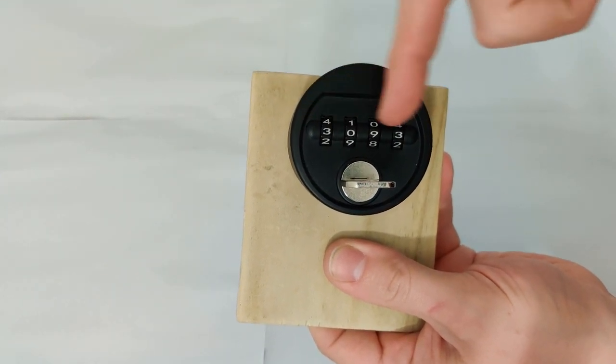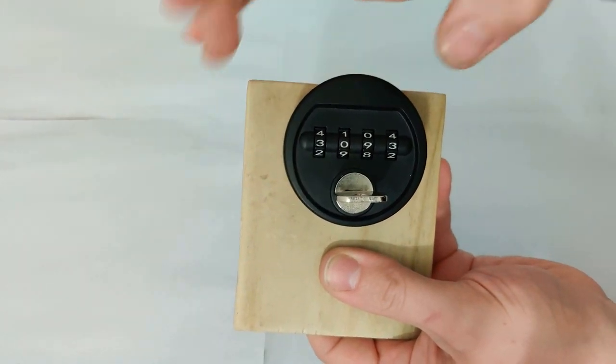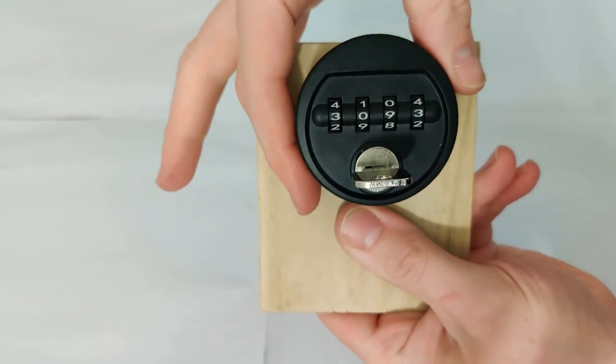Now watch what happens to the combination numbers when I turn the lock itself either to the left or the right. This is depending how the back of the cabinet will be set up, of course.